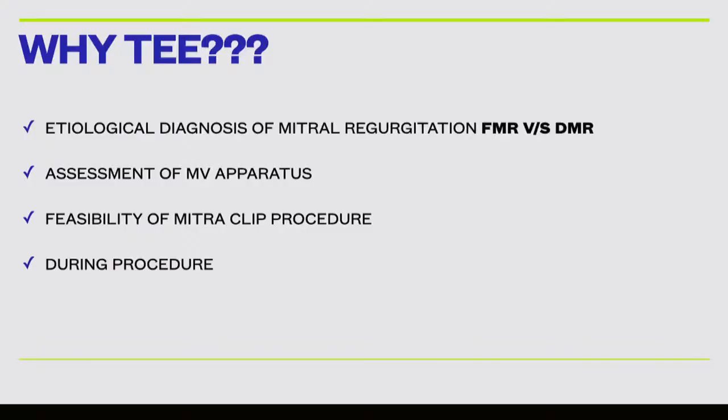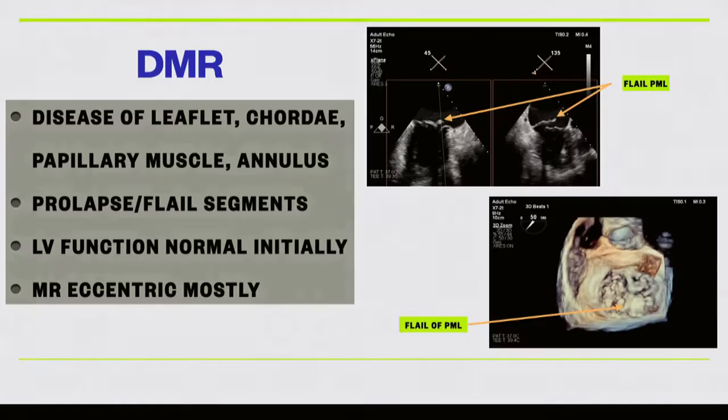New therapy for heart failure — we all know about MitraClip and the COAPT data, and how MitraClip helps in patients with functional mitral regurgitation. I want to focus on TEE and why it's very important to understand the diagnosis of MR — is it functional or degenerative — then assess the mitral apparatus and feasibility for MitraClip, and the role of TEE during the procedure. Degenerative MR is disease of the leaflet, papillary muscle, or annulus — prolapse or flail segment — with normal LV function. Functional MR is what we treat more in our country.